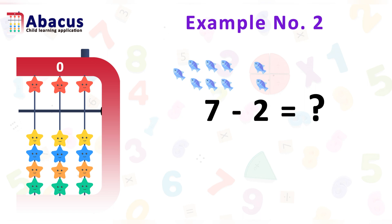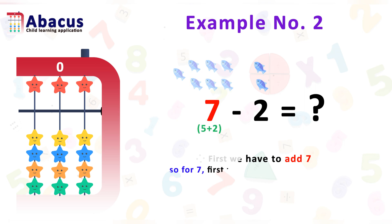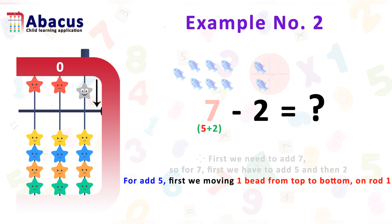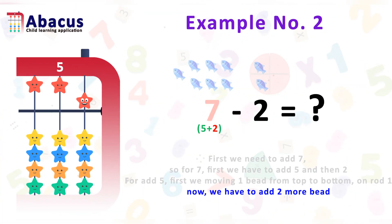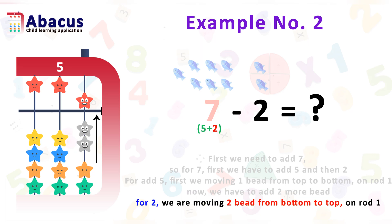Let's see example number 2: 7 subtract 2. First we have to add 7 and then subtract 2. For 7, first we add 5 and then add 2 more. To add 5, we move 1 bead from the top down to above the beam on rod 1 using the index finger. Now we need to add 2 more beads to get 7.